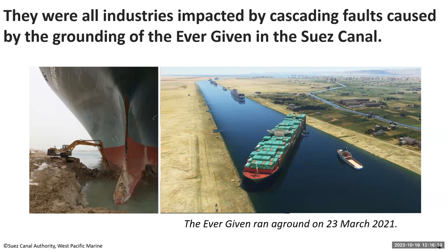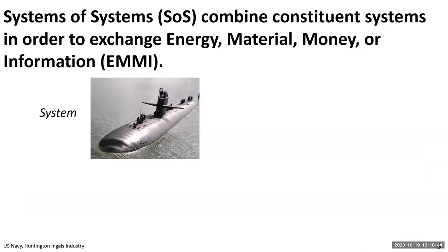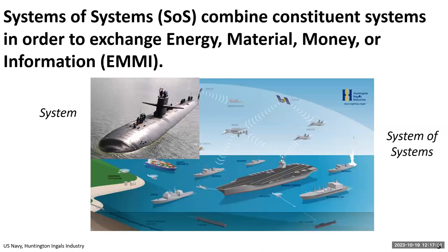So we know cascading faults are important. I want to also introduce the idea of systems of systems, which makes this even more complicated. Systems of systems combine constituent systems that exchange energy, material, money, or information. Going back to the submarine example — the submarine is a system with many parts that interact deterministically. But if I combine submarines into a carrier strike group, now I'm dealing with a system of systems — constituent systems with autonomy, exchanging mostly information. The world we live in is composed of systems of systems, and our group is interested in how to increase the resilience of these systems.